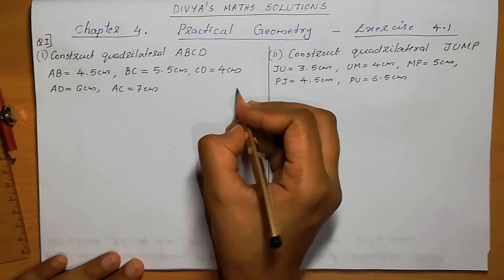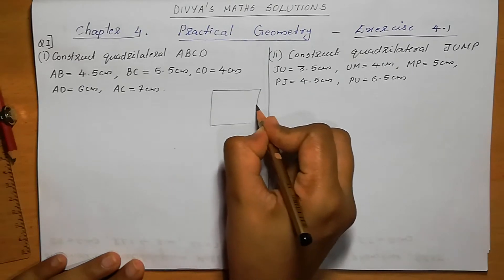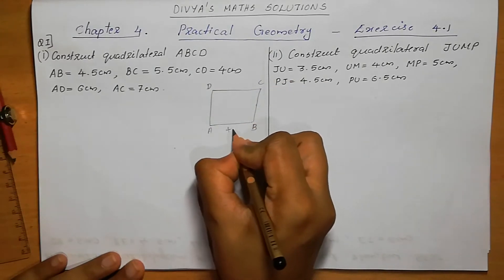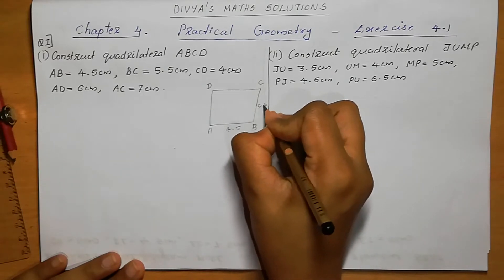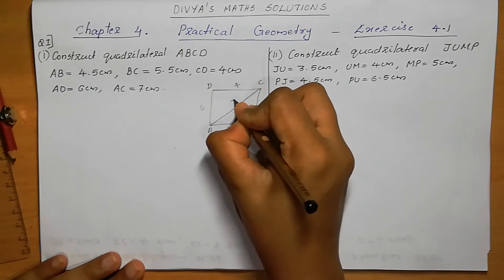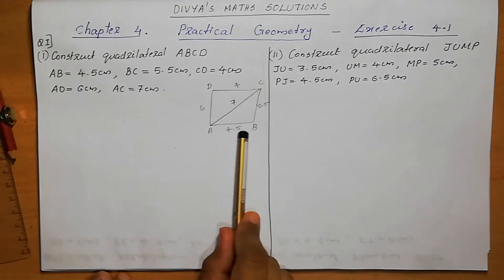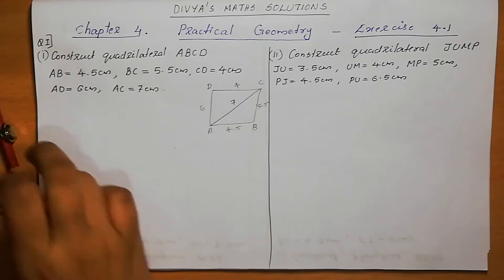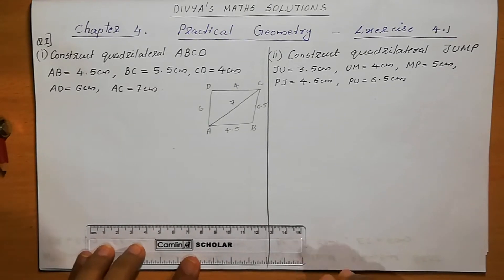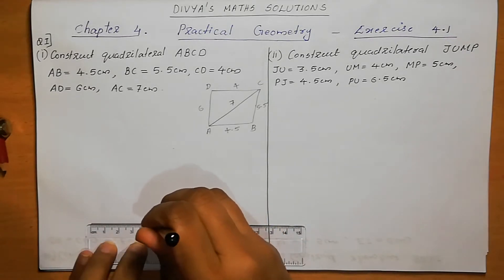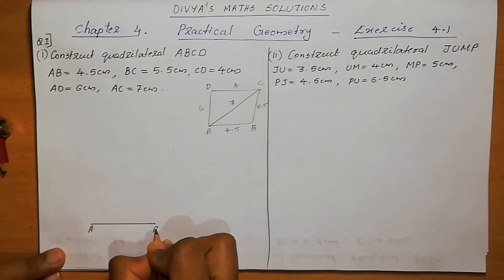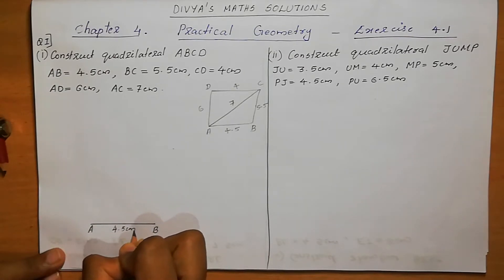Based on that rough figure we can do the construction. So we can mark ABCD: AB = 4.5 cm, BC = 5.5, CD = 4, AD = 6, AC = 7. Using this we can do the construction. The base of this quadrilateral is AB, and AB is 4.5 cm. We need to use a sharpened pencil, then mark AB equal to 4.5 cm.